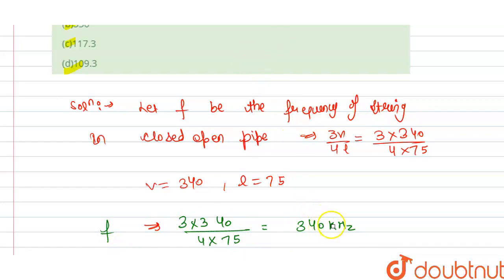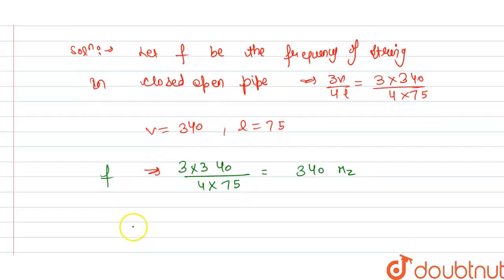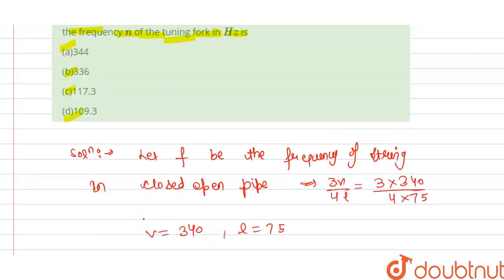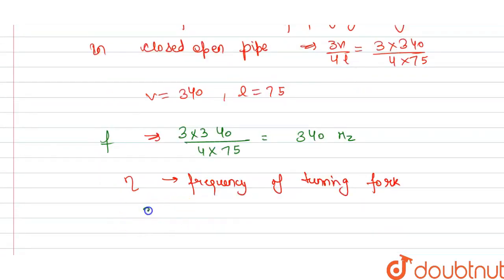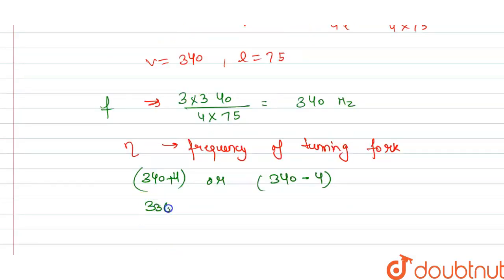This is in hertz according to the formula. Now we have the frequency of the tuning fork. This must be addition of 4 beats or subtraction of 4 beats, either 336 or 346. So n is either this or this.